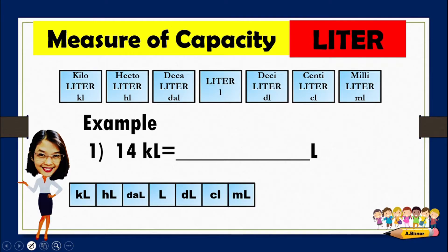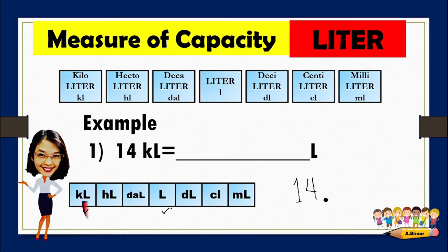Now let us have our example. We are going to convert 14 kiloliters to liters. We will use the converter diagram. The first thing we need to do is write the given: 14. Next, find the location of the decimal point. Since 14 is a whole number, the decimal point is at the right side of the last digit.